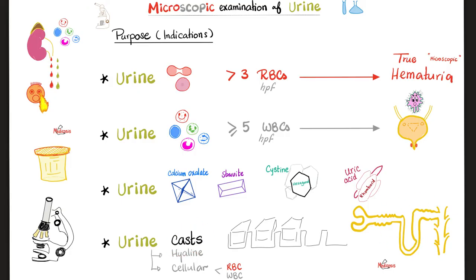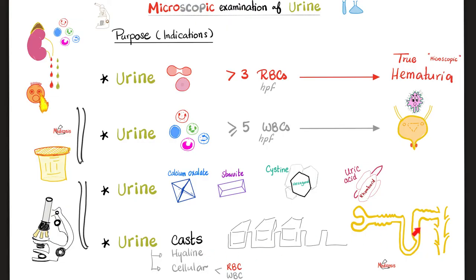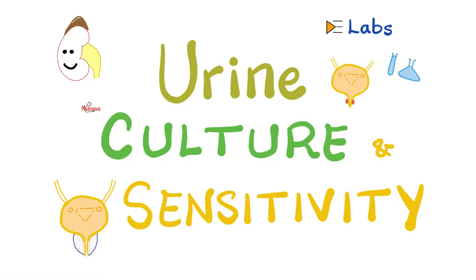When you see casts in the urine, blame the tubule of the kidney. A cast is like ice cubes — when you see ice cubes taking the shape of the cube, you can guess from the shape the container the ice was in. When you see casts in the urine, they look like tubules; they take the shape of the container, so you know it's a tubular disease. Do not blame the urethra, the bladder, or the ureter — this is coming from the kidney's tubule. Urine casts are divided into hyaline casts and cellular casts. When you see more than 5 white blood cells in the urine, the next step is urine culture.